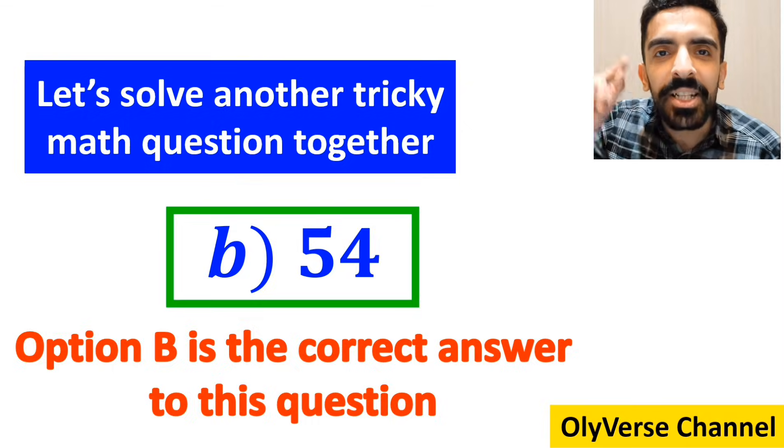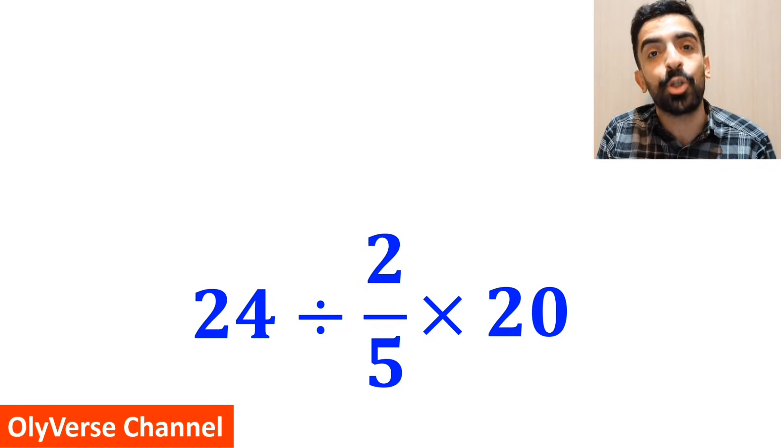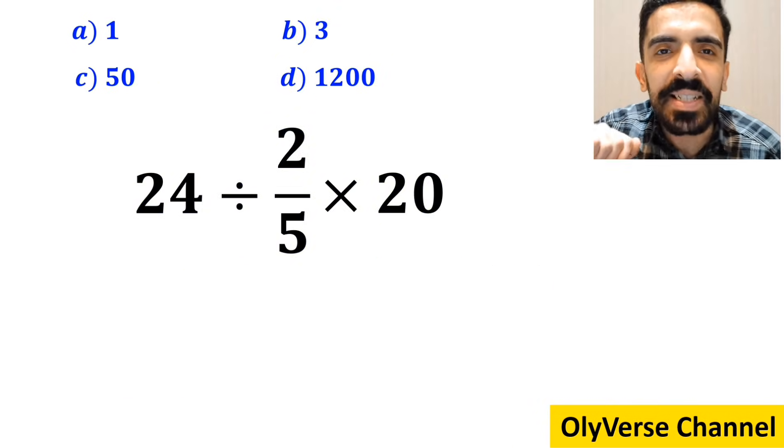Alright, now let's solve another tricky math question together. What is the value of the expression 24 ÷ 2/5 × 20? Which option do you think is the correct answer to this question? Let's break it down and solve it together.